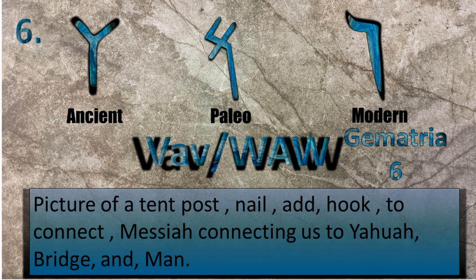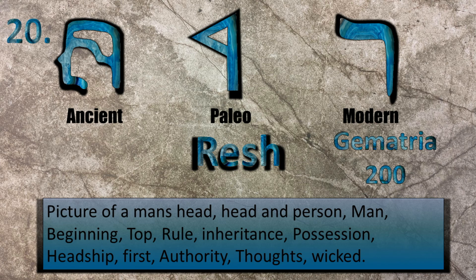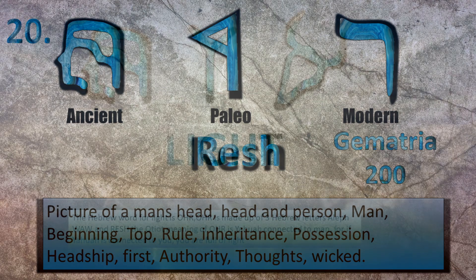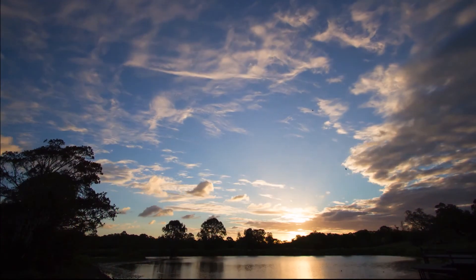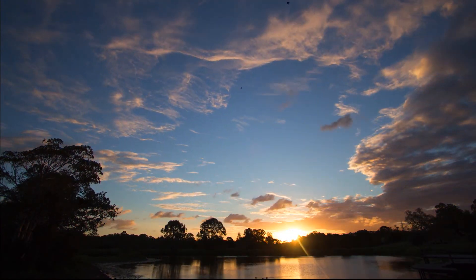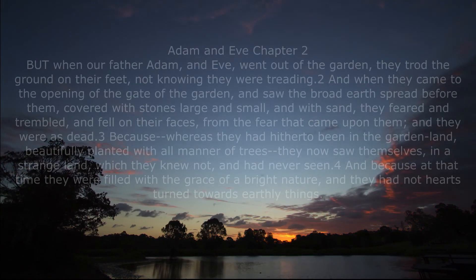The letter Vav is a picture of a tent post — it means nail, peg, hook; it means to connect. The letter Resh is a picture of a man's head — it can mean head, person, and it has to do with headship. The word 'Or,' or light in Hebrew, means Father Yahuwah connected to man. When Father Yahuwah is connected to man, man is full of light. Adam and Eve were full of this light before they fell.